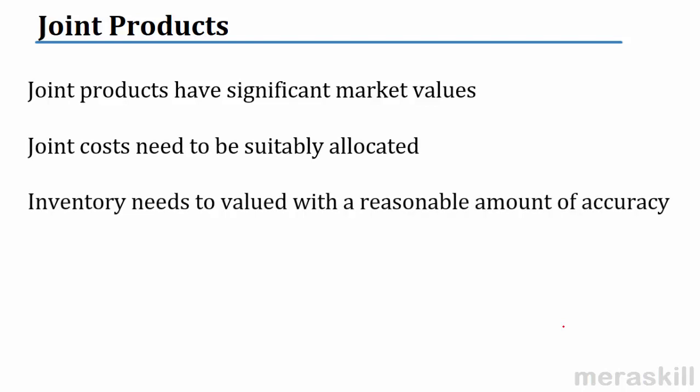Why are they allocated? That is the basis in which you will value inventory. So suppose you get 1,000 units of A and 2,000 units of B and you are able to sell only 500 or 800 units of A. The balance 200 units will be in inventory. What is the value of this inventory? In order to find out the value of the inventory, we have to apportion the joint costs.